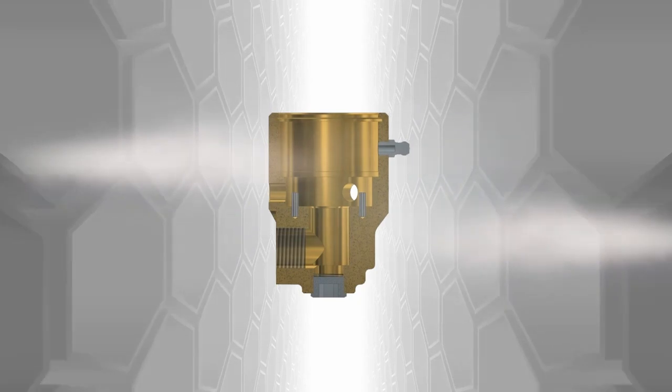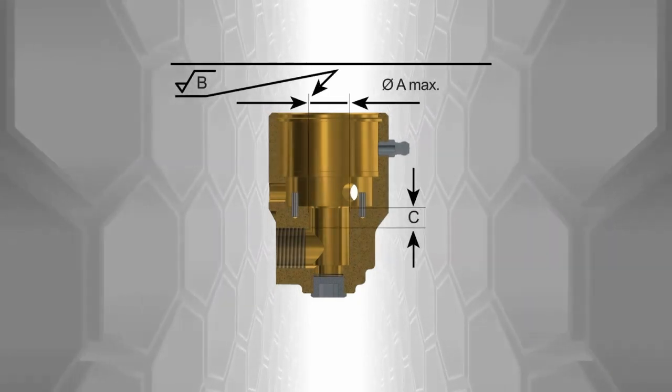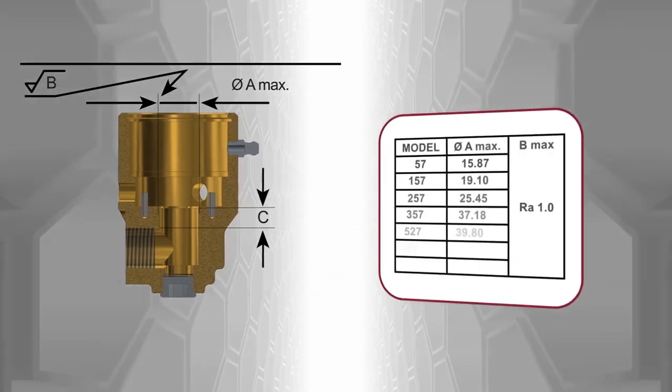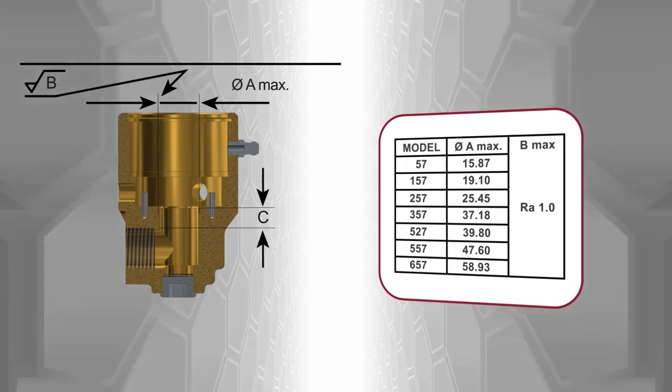Clean the union housing thoroughly then measure the bore surface for wear or pitting. The measured value should not exceed the maximum value given in the table for your 57 series model number.